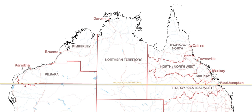The term Northern Australia includes those parts of Queensland and Western Australia north of latitude 26 degrees and all of the Northern Territory. Those local government areas of Western Australia and Queensland that lie partially in the north are included.